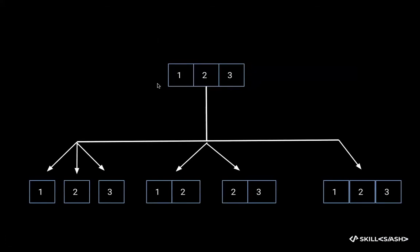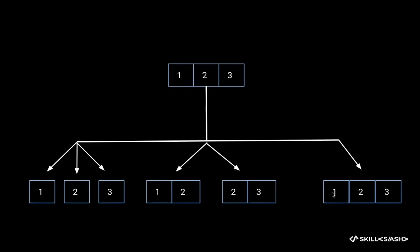As someone correctly noted, subarrays are arrays within an array. So 1 is a single-length array, 2 is a single-length array, 3 is a single-length array. [1,2] and [2,3] are two-length arrays, and the full array [1,2,3] is the three-length subarray. Note that [1,3] cannot be a subarray - they are a subset but not contiguous, so they don't qualify.